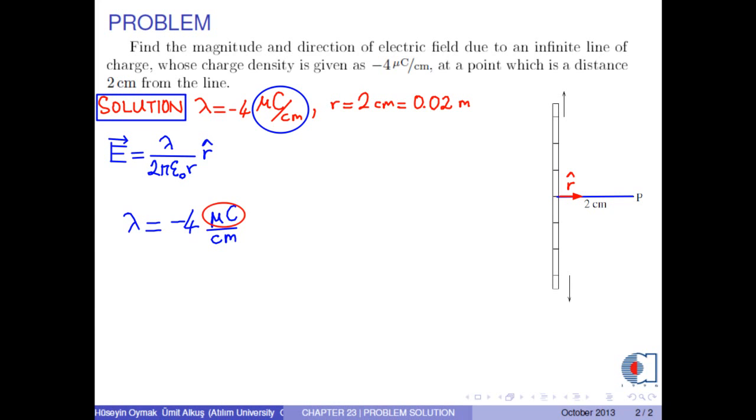Here, microcolons is not an SI unit, and we convert it into coulombs with the following conversion factor. So, microcolons cancel each other. Now, in the denominator, we have centimeter, which is not an SI unit.